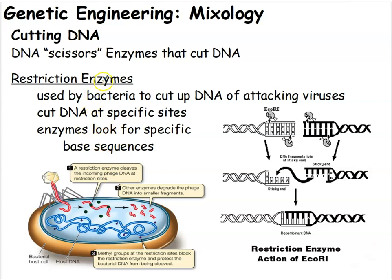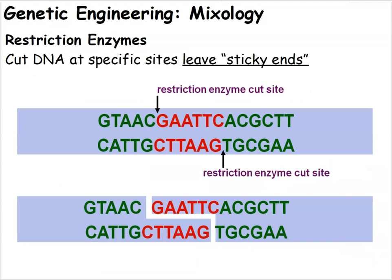Restriction enzymes cut DNA at very specific sites. The enzyme travels through the DNA looking for a specific set of bases, and once it finds those bases, that triggers the enzyme to cut the DNA at that point. Importantly, the DNA doesn't get chopped straight through. The restriction enzyme cuts in a staggered way — cutting part of one chain but not the other at the same point — and it leaves what are called sticky ends.